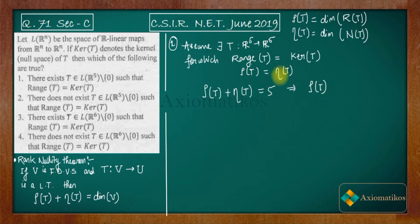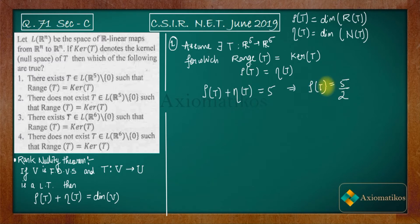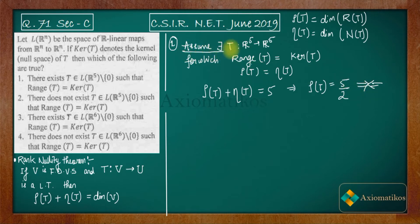Because range and null space are equal, we can replace nullity of T by rank of T, giving us 2·rank(T) = 5, so rank of T equals 5/2. But rank, or the dimension of a space, is always a natural number (whole number, including 0). Since 5/2 is not a natural number, we get a contradiction. Therefore, there does not exist any T from R⁵ to R⁵ for which range of T and kernel of T are equal.